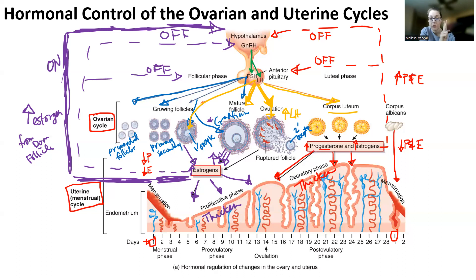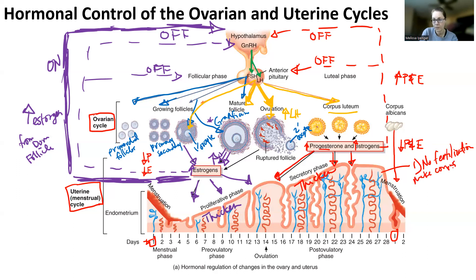There are two options for this two-week period from ovulation to day one again. Option one: no fertilization. If you have no fertilization, you make the corpus albicans, you decrease progesterone and estrogen, you start menstruation, and you start the whole cycle over again. I've turned off that negative feedback loop, so GnRH and FSH turn back on, and I start all over again creating a new follicle.